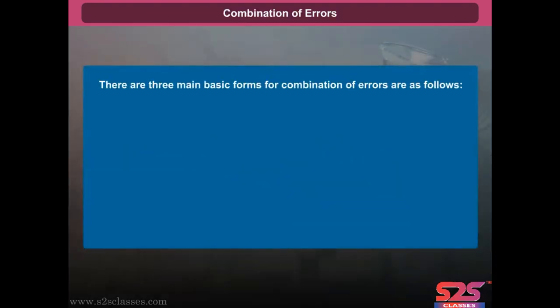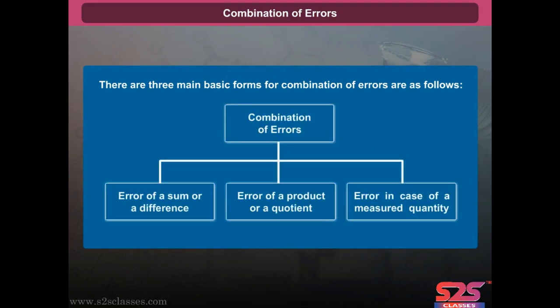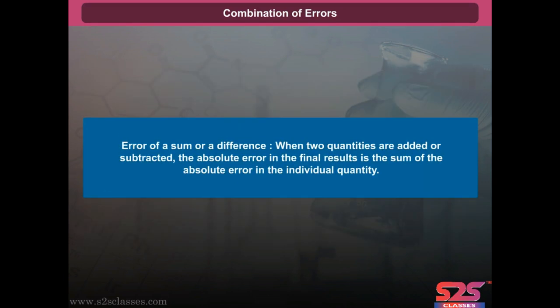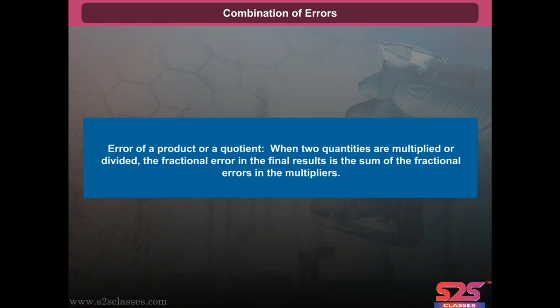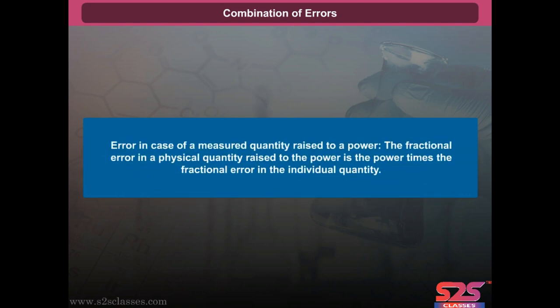There are three basic forms for the combination of errors. Error of a sum or difference: when two quantities are added or subtracted, the absolute error in the final result is the sum of the absolute errors in the individual quantities. Error of a product or quotient: when two quantities are multiplied or divided, the fractional error in the final result is the sum of the fractional errors in the multipliers. Error in case of a measured quantity raised to a power: the fractional error is the power times the fractional error in the individual quantity.